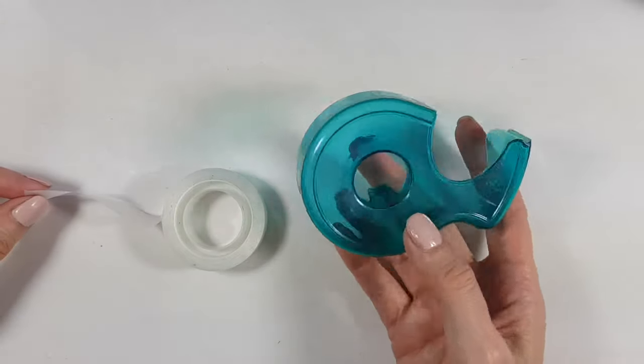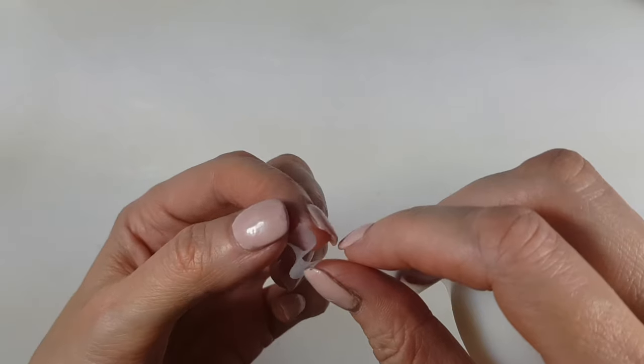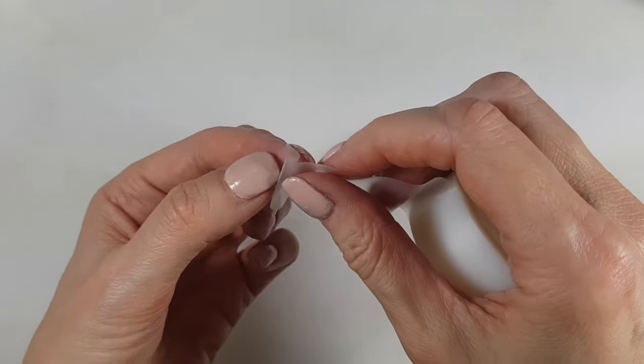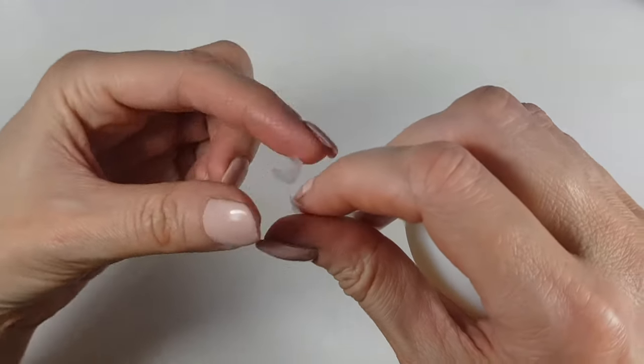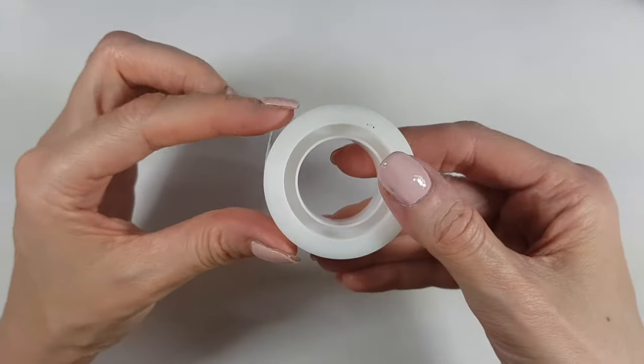Then what I do to avoid looking for the end again, if you don't have a dispenser, is fold the end like that so it's going to be taped on itself and it's going to create a label. So it's easier to grab and use for next time.